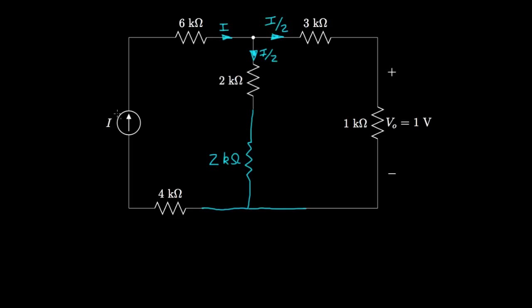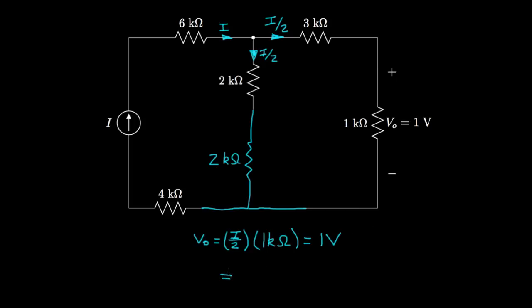We know that whatever current we apply, half of it will go through this path. The output voltage V0 equals I over 2 times the 1-kilohm resistance, and we want that to equal 1 volt. So solving, I must equal 2 volts divided by 1 kilohm, which is 2 milliamps.